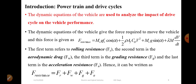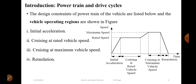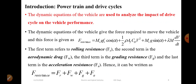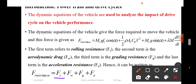The dynamic equations of the vehicle are used to analyze the impact of the drive cycle on vehicle performance. The total resistance force F_resistance includes: rolling resistance F_r = M·g·f_r·cos(α); aerodynamic drag F_w = (1/2)·ρ·A_f·C_D·V²; grading resistance F_G = M·g·sin(α); and acceleration resistance F_a = λ·M·(dV/dt).